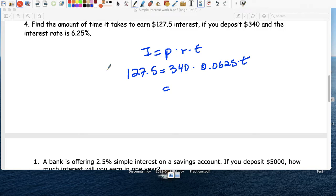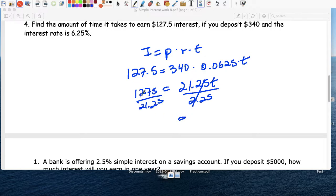So that's the question, 340 times 0.0625, so this is 21.25T, and we divide both sides by 21.25, so it's 127.5 divided by 21.25. And this gives you your money for six years in the bank.